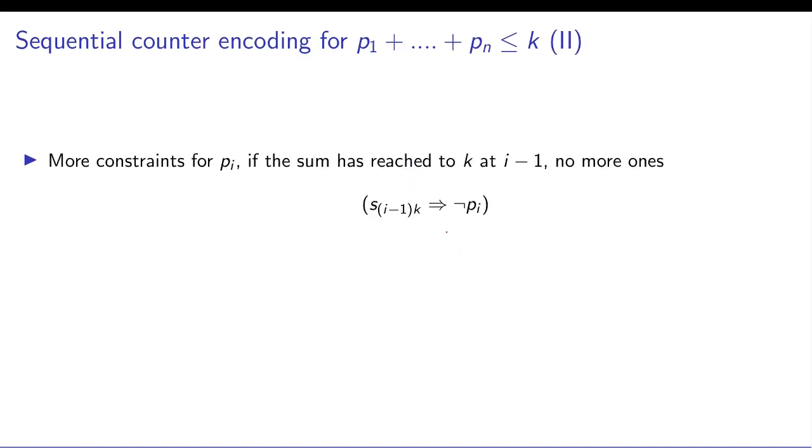And then you have to say that there are not too many bits true. As soon as you hit k at some position, then afterwards no more bits can be true. So you have to say okay sum to k has been reached, therefore now onwards you have not of pi.